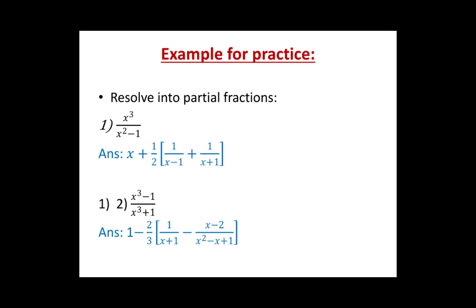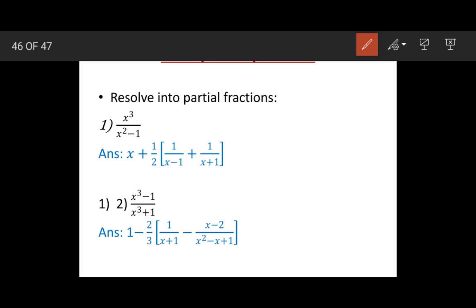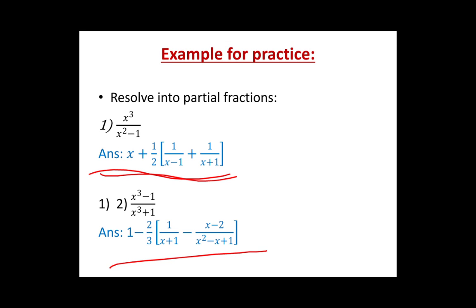Now there are two practice questions for you. Both are improper fractions — the first because the numerator degree is greater than the denominator, and the second because they have the same degree. For both, first convert into a proper fraction, then find the partial fractions. The final answers are given so you can solve and check. With this I am concluding the video and completing the partial fractions chapter. Thank you, students.